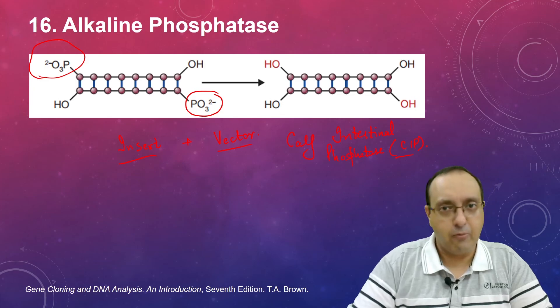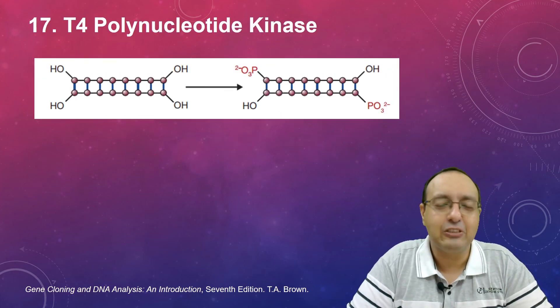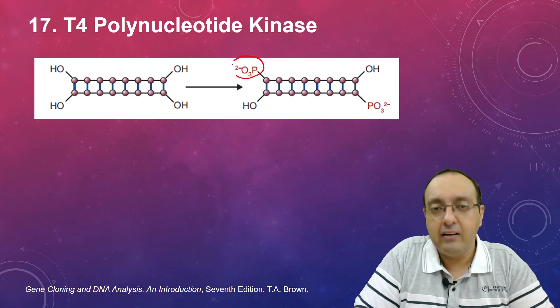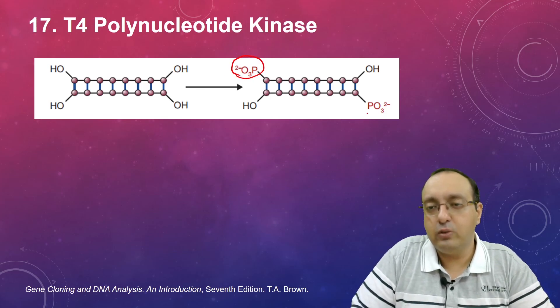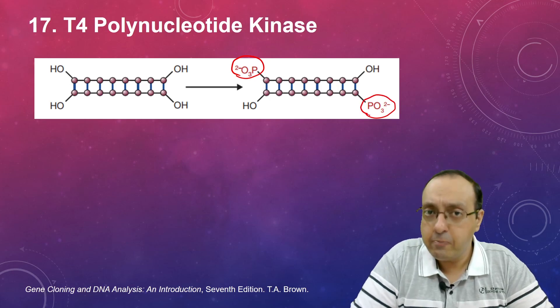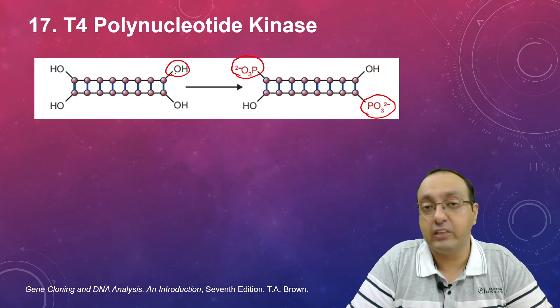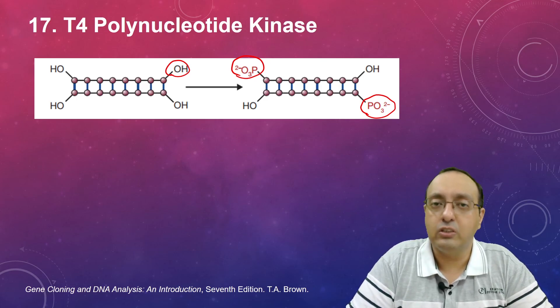Drum roll, and now we are at the last enzyme which is the T4 polynucleotide kinase. This is used to add the gamma phosphate into the five prime end of the DNA, especially one which lacks that, so it has already been treated with for example alkaline phosphatase. It is used for making labeled DNA molecules.